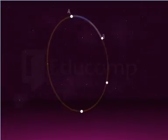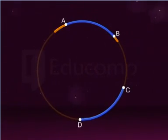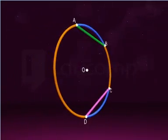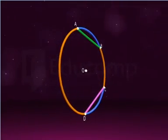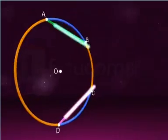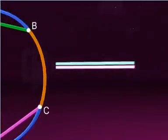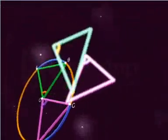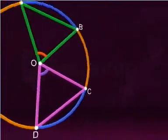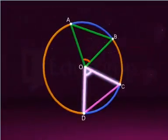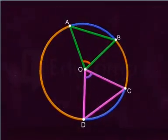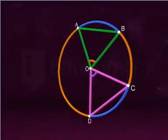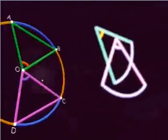Suppose AB and CD are two equal arcs of a circle with center O, and AB and CD are the respective chords. Since chords corresponding to congruent arcs are equal, the angles subtended by such equal chords are also equal. Thus, angles AOB and COD subtended by equal chords AB and CD, corresponding to equal arcs AB and CD, are also equal.